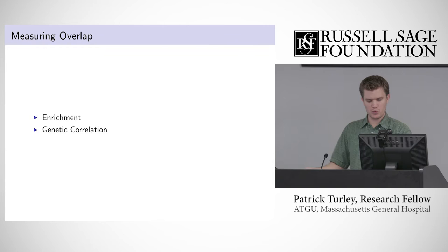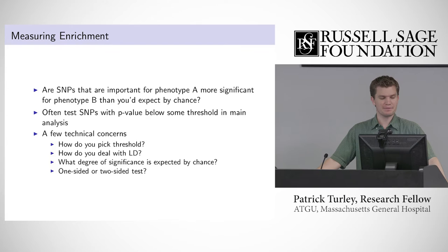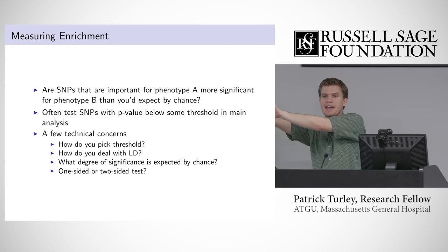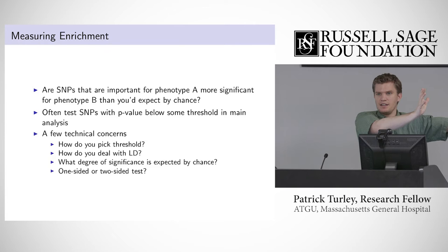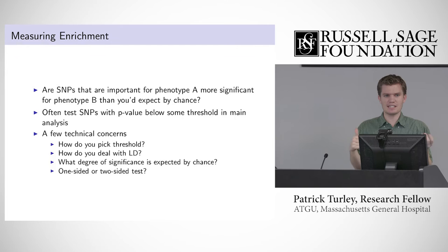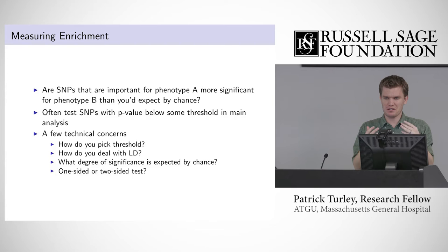When we talk about overlap, there are two ways to think about it: enrichment and genetic correlation. Enrichment is the idea behind the proxy phenotype method — are SNPs that are important for phenotype A also important for phenotype B? We can do this by taking SNPs with a p-value less than p-naught and testing them in a GWAS for phenotype B, to see if those SNPs are more significant. That's the high-level view question.